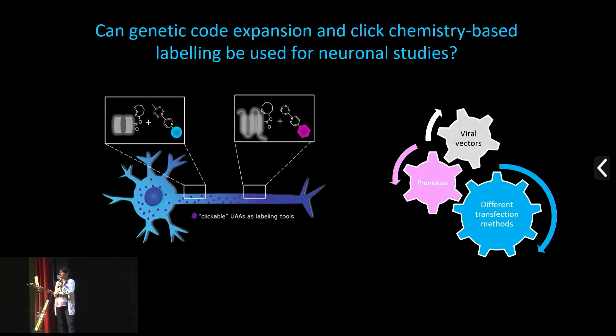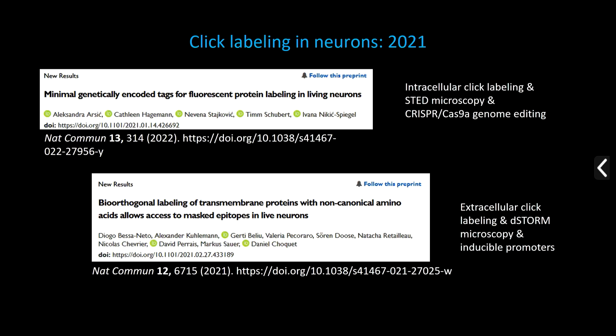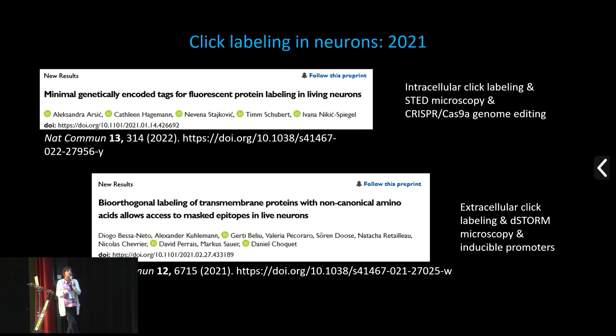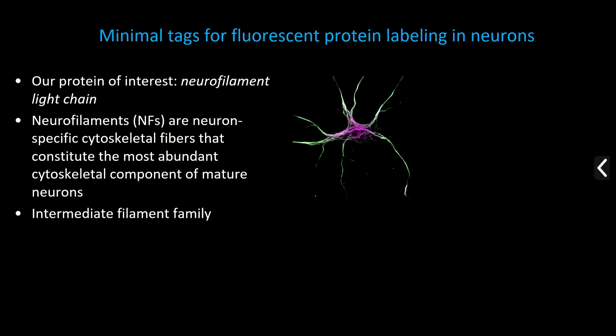When I started my group, I was interested in whether we could bring this into neurons — can we make them express these components and label proteins with click chemistry? Primary neurons are more complex than conventional cell lines, so optimization took some time. In 2021, my group published a preprint, and in parallel Marcus Zauer and Daniel Choquet also published their preprint, both showing that click chemistry can be used for labeling proteins in primary neurons. Our papers were complementary: we focused on intracellular click labeling and STED microscopy, while Marcus and Daniel did extracellular labeling and dSTORM.